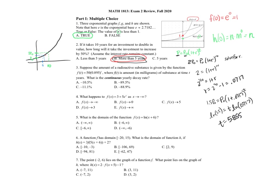Number three: suppose the amount of a radioactive substance is given by that function. What is the continuous yearly decay rate? We know that 1 plus R equals e to the continuous rate. So we set 0.895 equal to e to the R and solve for the rate by taking the natural log of both sides: R equals the natural log of 0.895, which is approximately negative 0.1109.